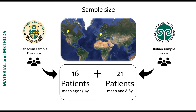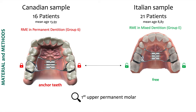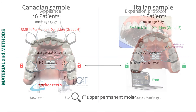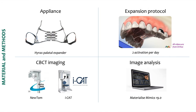For this study, we collected 16 patients from the University of Alberta in Canada and 21 patients from the University of Insubria of Arese, Italy. The patients from Canada had hyrax expanders anchored to the first permanent molars, while the patients from Italy had the hyrax expanders anchored to the second deciduous molars. The activation protocol was two activations per day. Patients then had CBCT images taken at start and when the appliance was removed, and these images were analyzed using MIMICS.